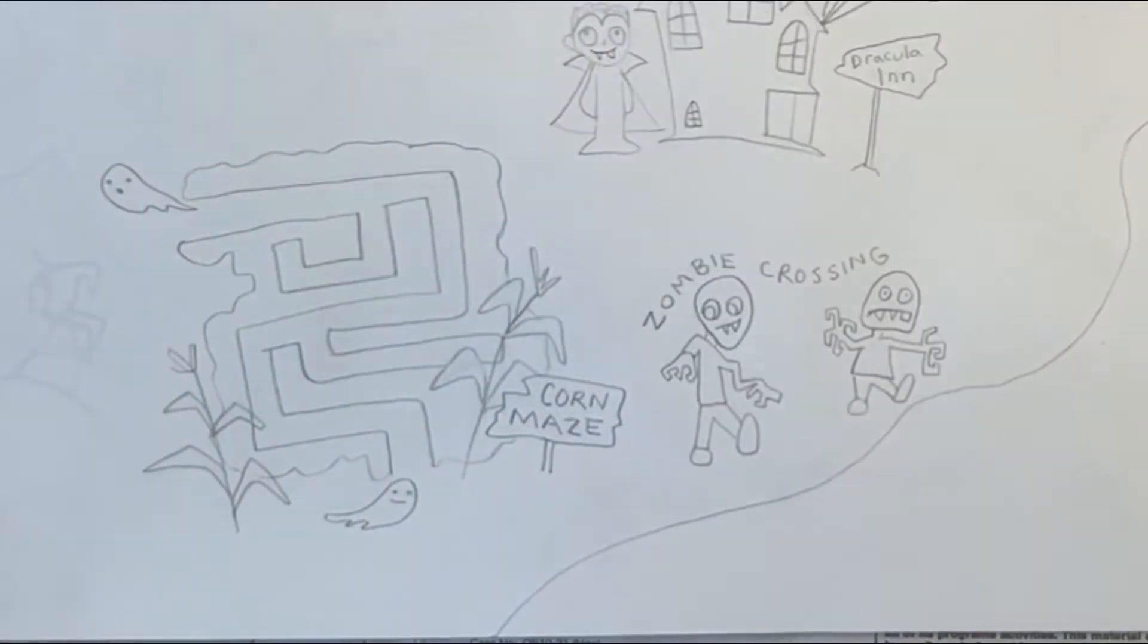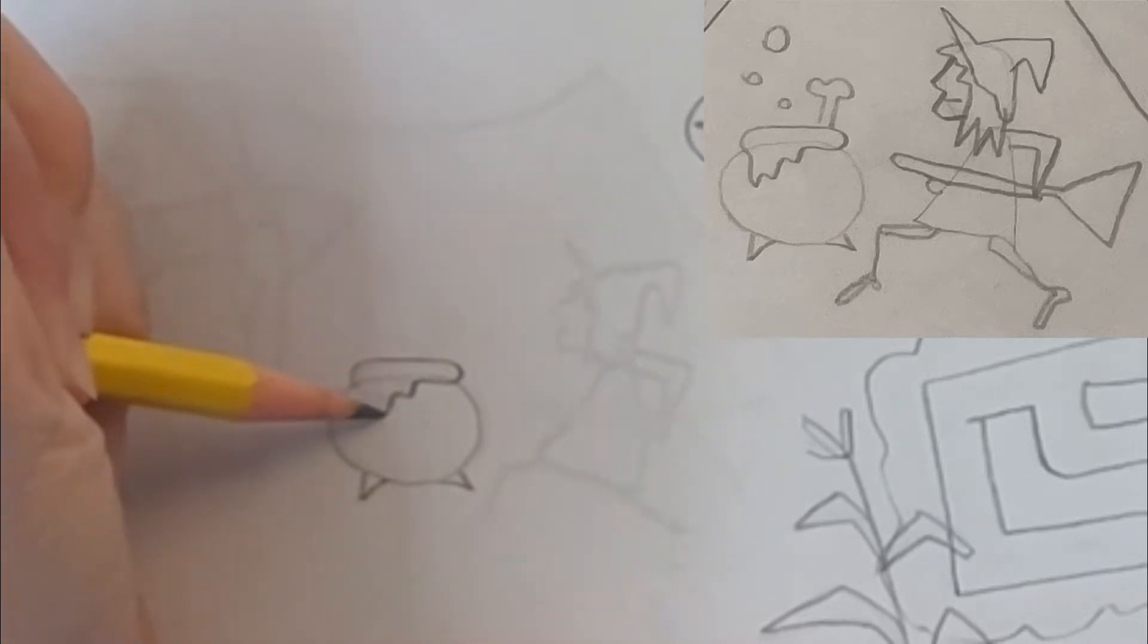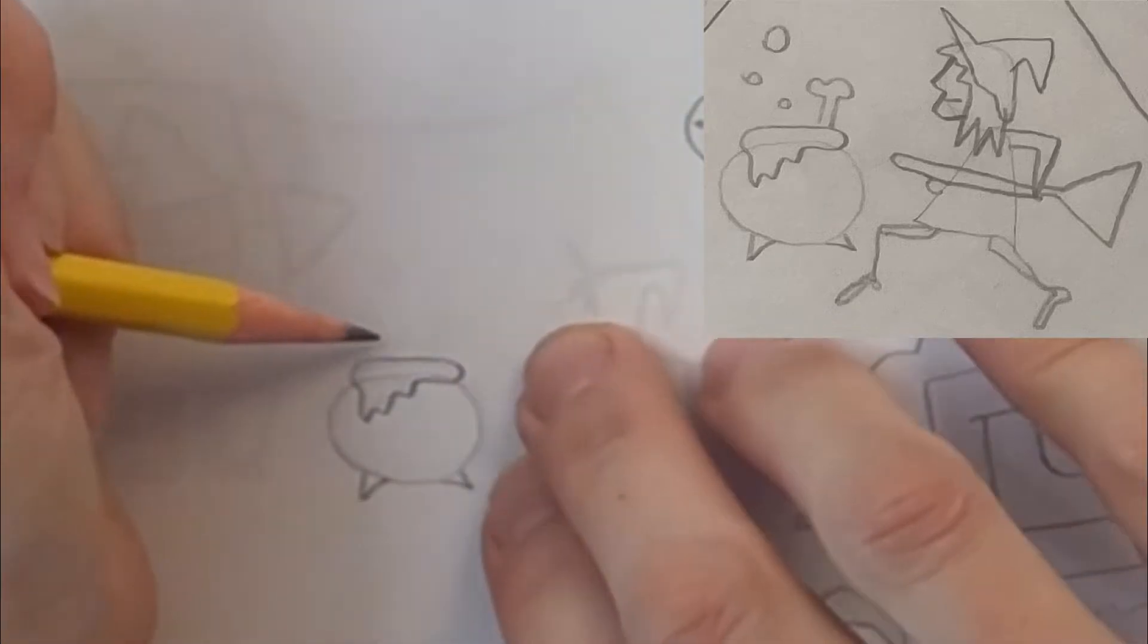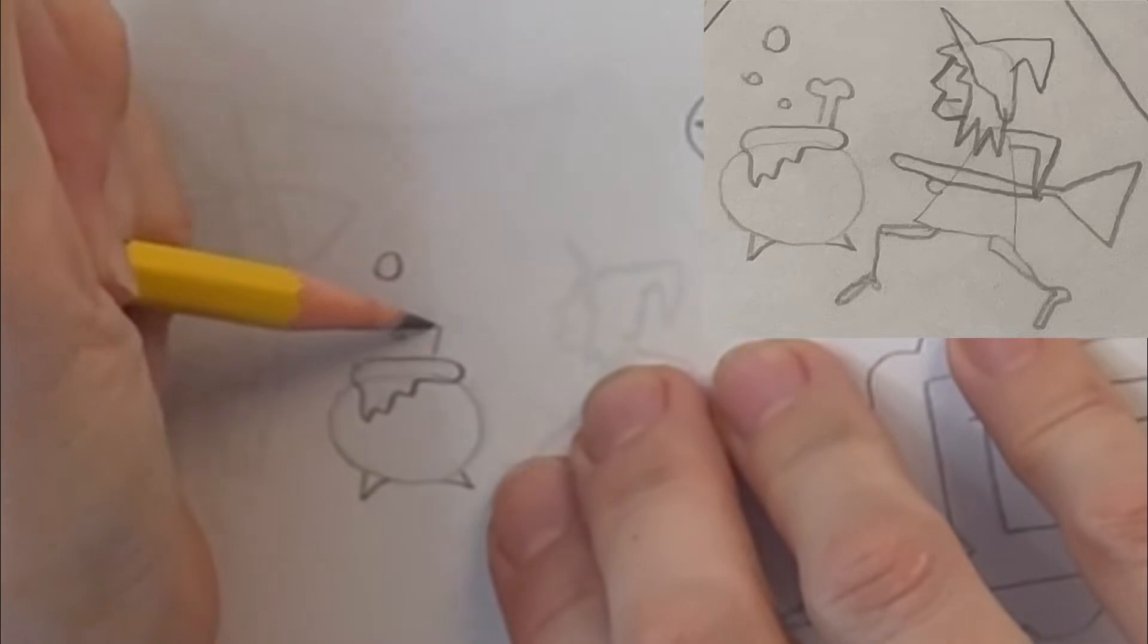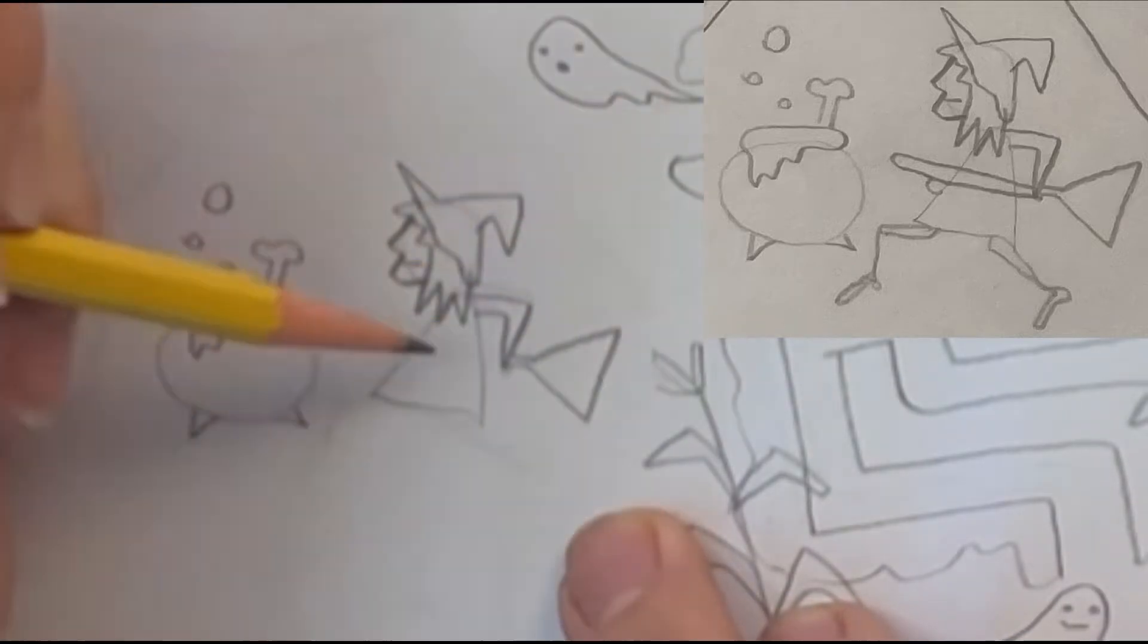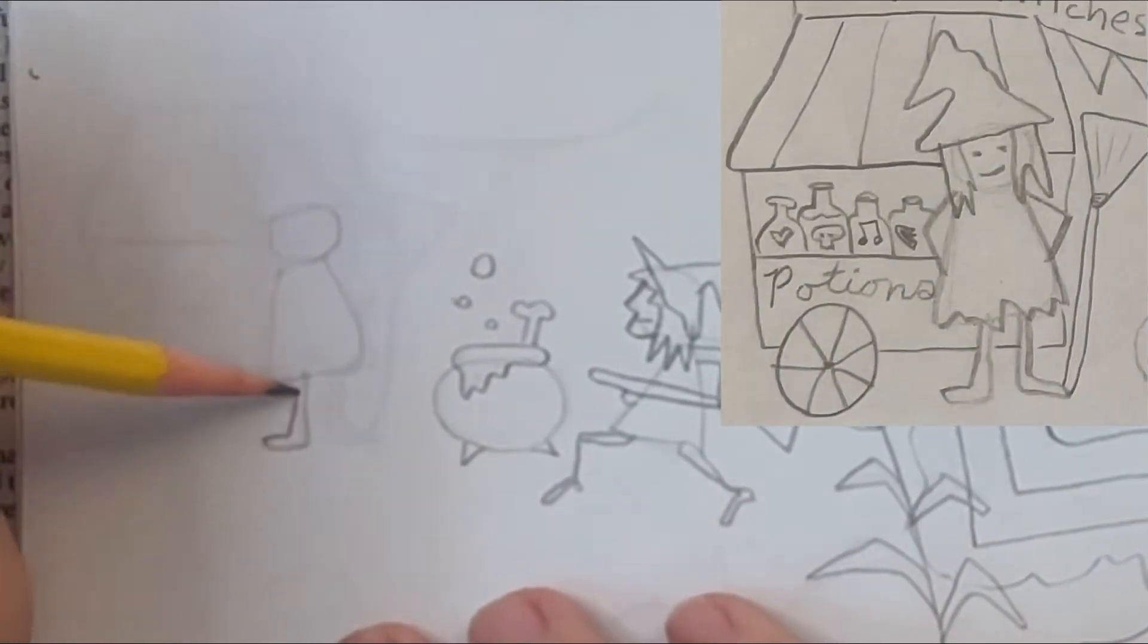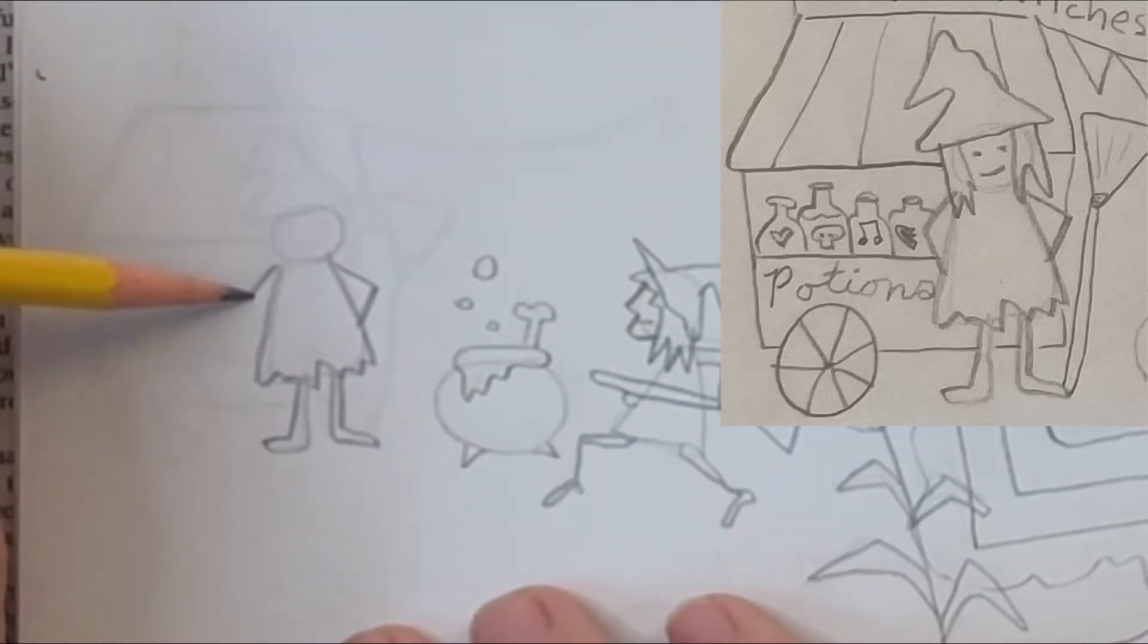Over here on the left, I'm adding a witches bazaar. This is a place where witches can gather and sell their magical goods. I'm designing a large cauldron that will have some kind of potion in it. Then right here I'm adding a witch holding a broomstick standing watch over the potion.